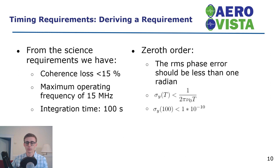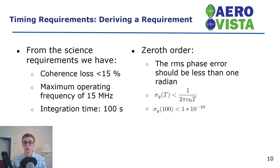We would like to derive timing requirements from the measurement or scientific requirements. For Aero and Vista, the science requirements are that we achieve coherence loss of less than 15%, a maximum operating frequency of 15 MHz, over an integration time of 100 seconds. For a zeroth-order model of how accurate our clocks need to be, we can require that the RMS phase error should be less than 1 radian, in which case the Allan deviation σ_y at 100 seconds should be less than 1×10⁻¹⁰.